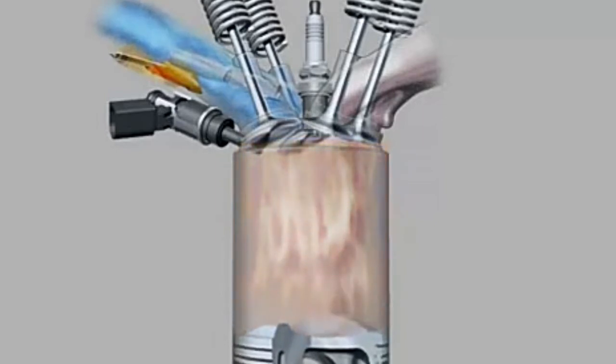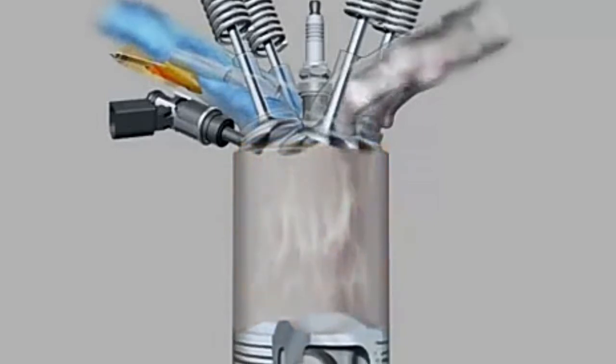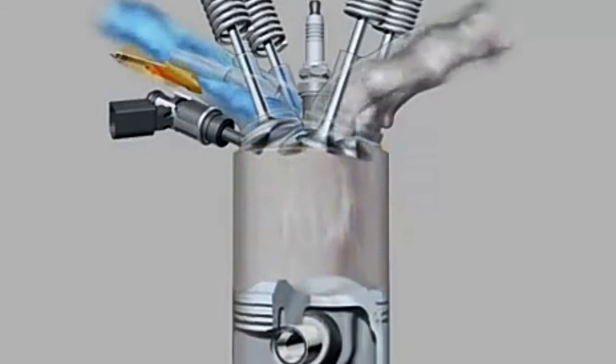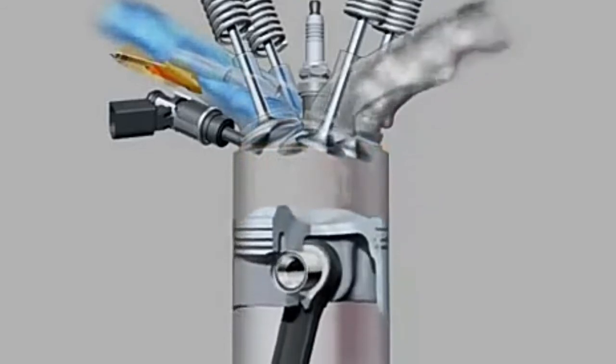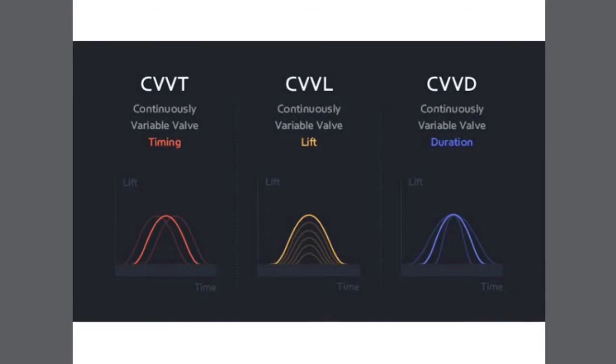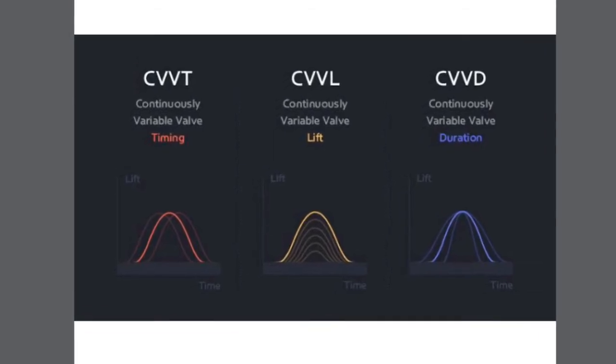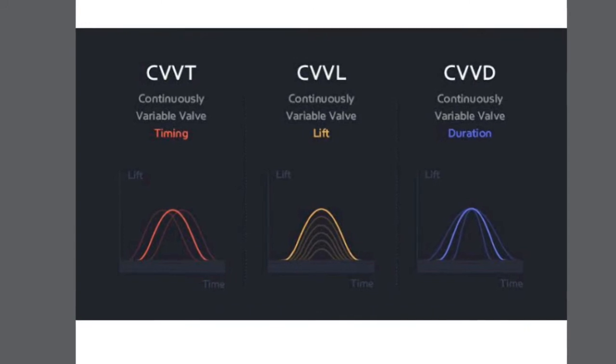We have to provide anywhere in between the short and long period. There will be an optimum duration to provide the exact amount of air to produce the maximum power for that particular RPM.